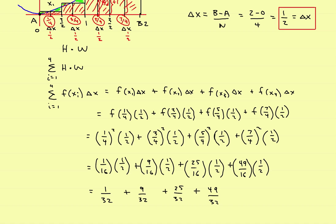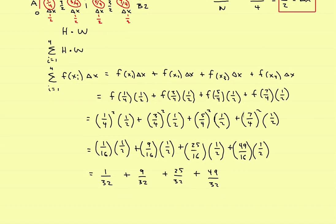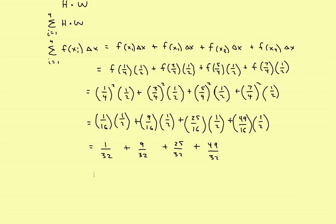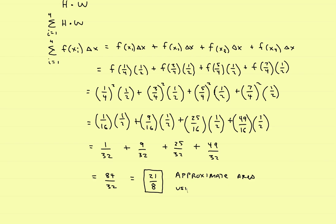So if you add all these together, what you would get would be 84/32. Add them all up and you wind up with 84/32, which simplifies down to 21/8. Now, this is the approximate area — not the exact area — but the approximate area using four intervals or four rectangles.